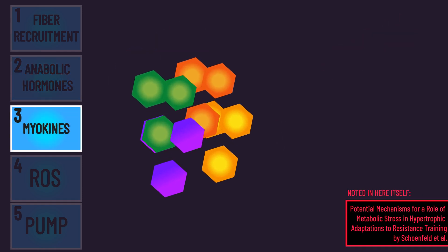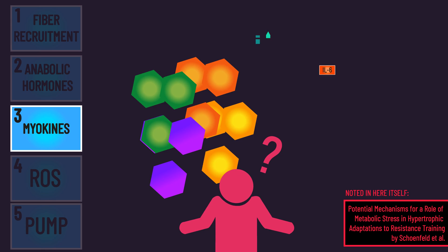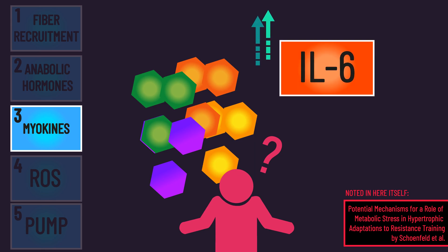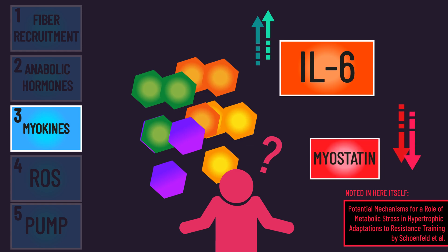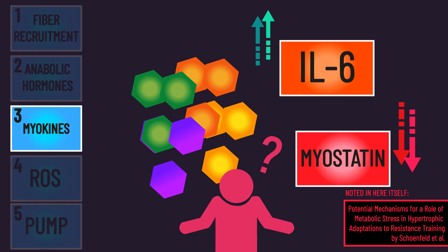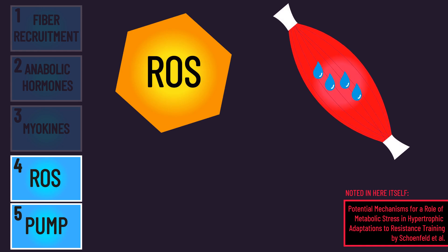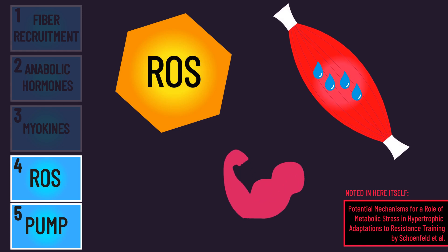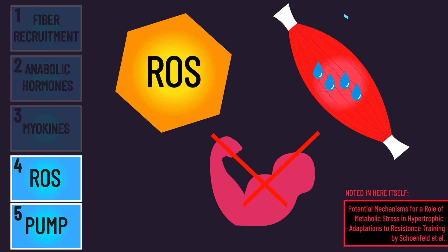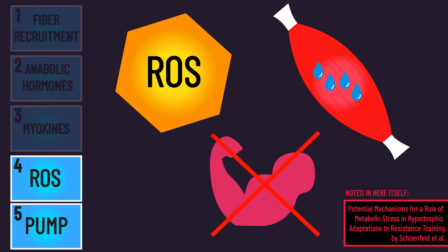With myokines, the evidence is simply inconsistent on whether metabolic stress truly increases growth-promoting myokines like interleukin-6, and decreases myokines that limit muscle growth like myostatin. With the fourth and fifth ones, there exists alternative evidence suggesting reactive oxygen species and fiber swelling may not promote hypertrophy.